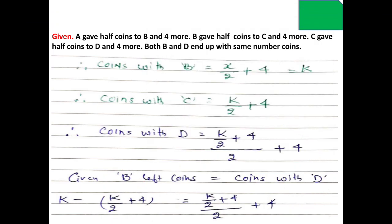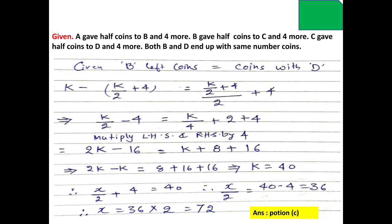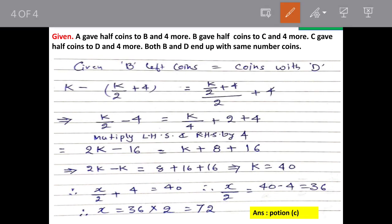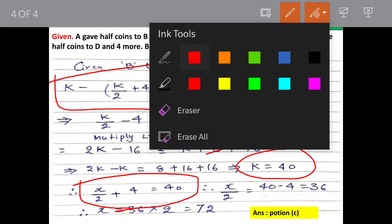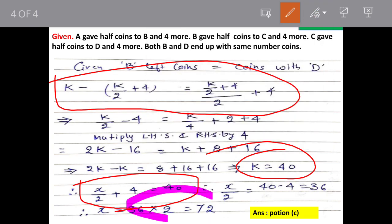So all we have to do now is to simplify and find the value of K and once we have found the value of K then we substitute the value of K with the original equation and then find out the value of X. So when we simplify this equation we'll get value of K as 40. Now K is what? K is X by 2 plus 4. So X by 2 plus 4 is equal to 40 and when we solve this we'll get X is equal to 72.